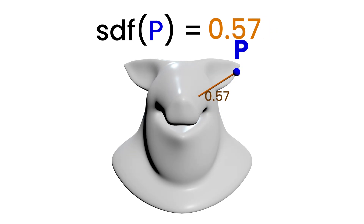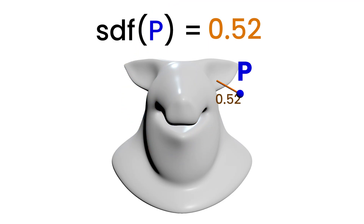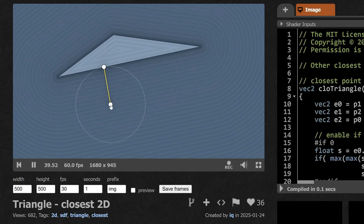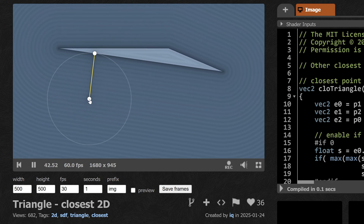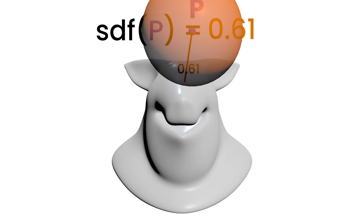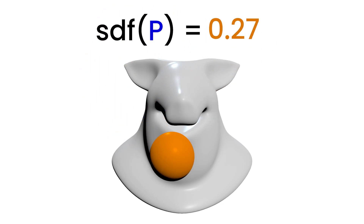Now at the moment I'm drawing it as if you know the direction to the shape, but you don't — you only know the distance. It could be in any direction: up, down, left, right — anywhere inside a sphere. So it's normally drawn using a sphere. You can think of it not only as the distance to the surface, but also as the biggest radius of a sphere you can place nearby without intersecting anything.